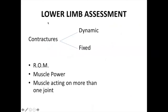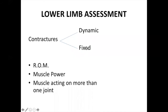The lower limb is the most important assessment because the child may or may not be able to walk. We assess contractures — whether they are dynamic or fixed. Dynamic contractures are usually easy to manage; fixed contractures need further assessment for structural changes or fixed muscle contractures. We also assess range of motion and muscle power across one or two joints.